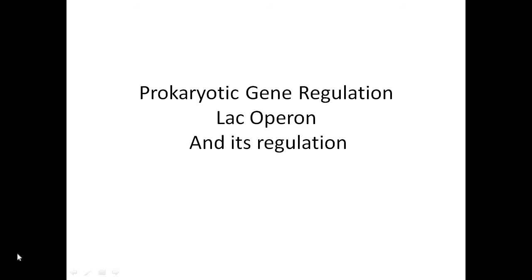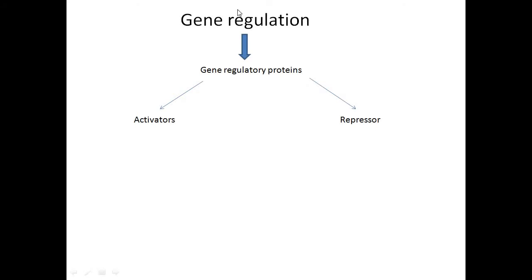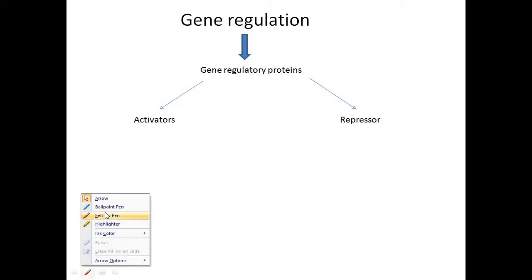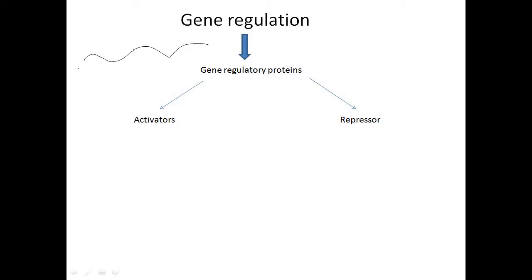Prokaryotic gene regulation mostly occurs at the level of transcription. Most forms of gene regulation are mediated by gene regulatory proteins, which bind with regulatory sequences present in the DNA. In the DNA there are regulatory genes which code for gene regulatory proteins. These regulatory proteins can be of two types: either they are activators or they are repressors.